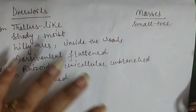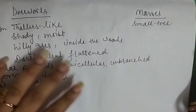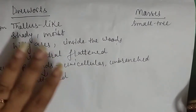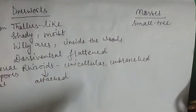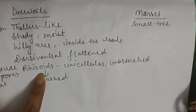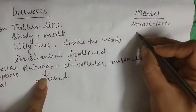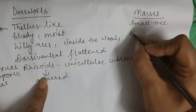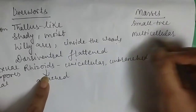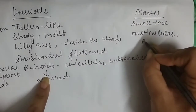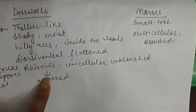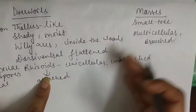The habitat for mosses is also shady, moist, and hilly areas. Another difference: in liverworts the rhizoids are unicellular and unbranched, but in mosses the rhizoids are multicellular and branched.